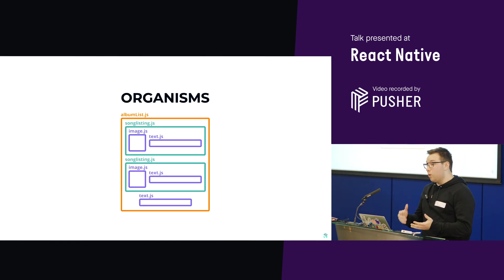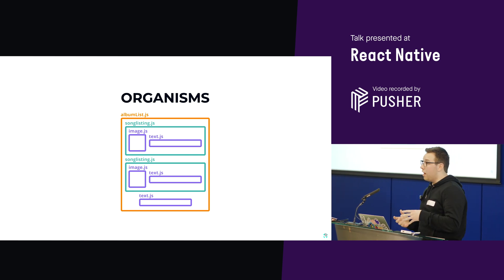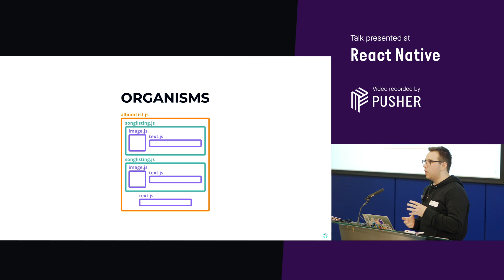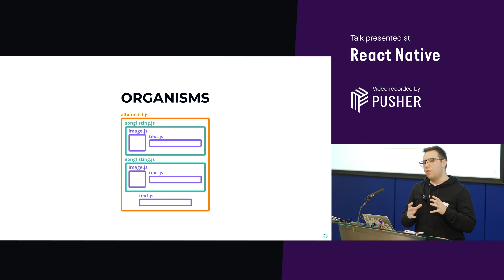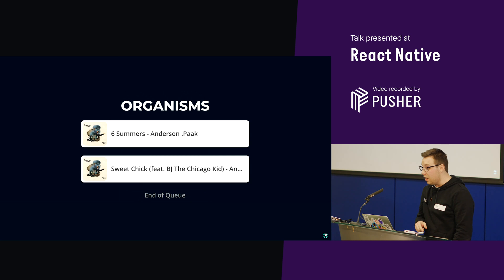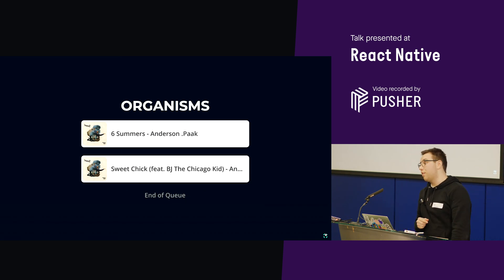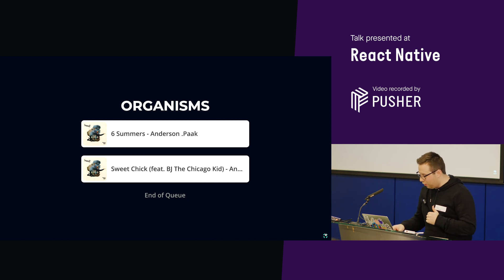And then we get to organisms. This is where you start combining your molecules together with other atoms, and you're essentially forming up bigger components, bigger portions of your screen. These are probably the most important sections because you can start using them in multiple areas of your code. In this sense, I've got two song listings and some text at the bottom saying you've reached the end of the album.